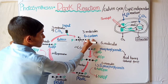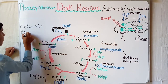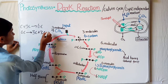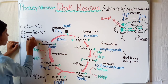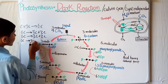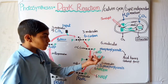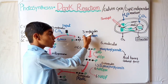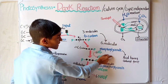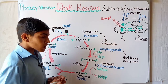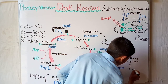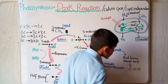Each molecule of six carbon splits into two molecules of three carbon. So three molecules of six carbon will split into six molecules of phosphoglycerate. Phosphoglycerate is a type of acid having a carboxyl group — COOH — which is a carbon double bonded with one oxygen and single bonded with another oxygen and a hydrogen.